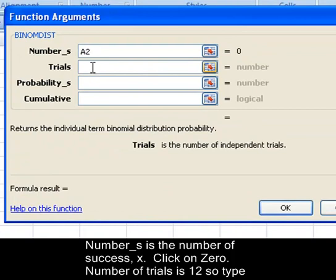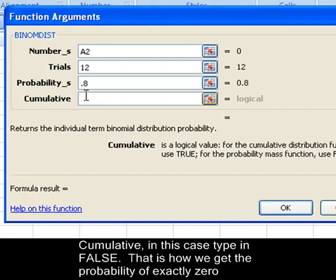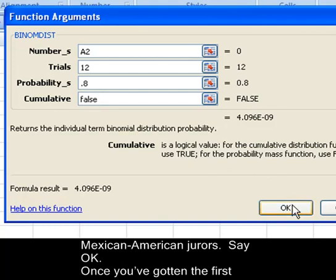Number of trials is twelve, so type in the number twelve. Probability of success is eighty percent, so type in eighty percent or point eight. Cumulative, in this case type in false. That is how we get the probability of exactly zero Mexican-American jurors.